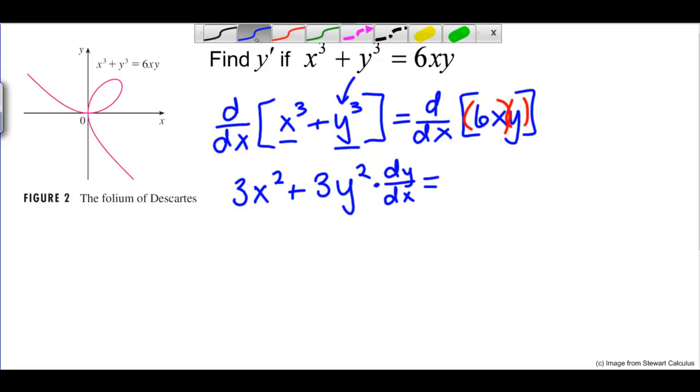Using the product rule, we're going to get the derivative of 6x in terms of x is just 6. We keep the y unchanged plus, now we keep the 6x unchanged. The derivative of y in terms of x is just dy/dx.